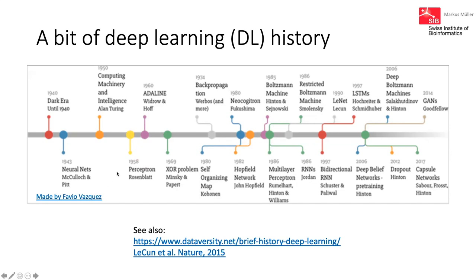The first neural network resembling what we understand today was the perceptron by Rosenblatt — just an input layer and one output neuron with some training algorithm, which could be used for classification.